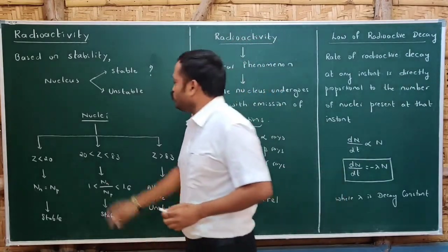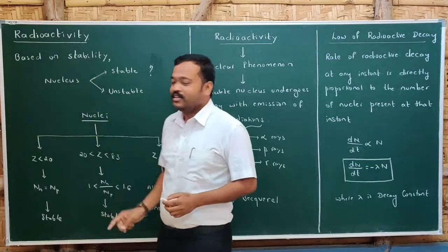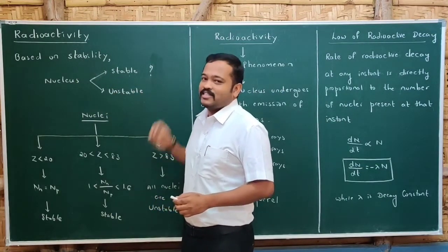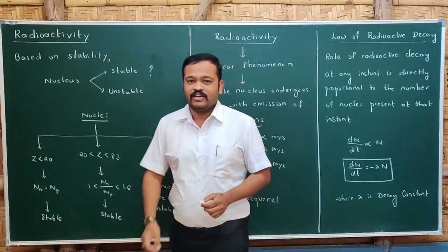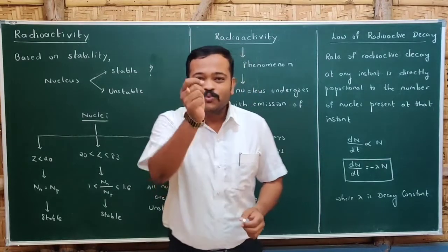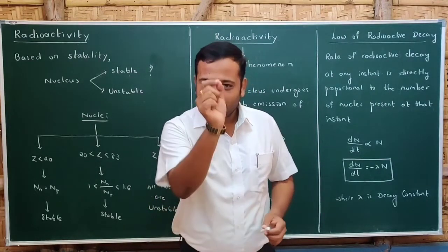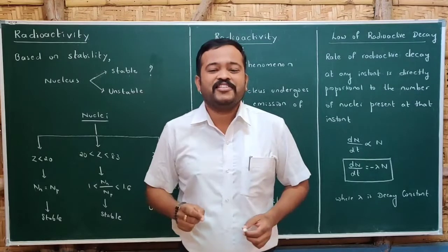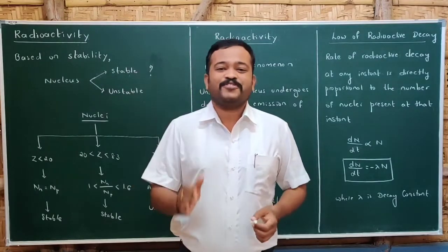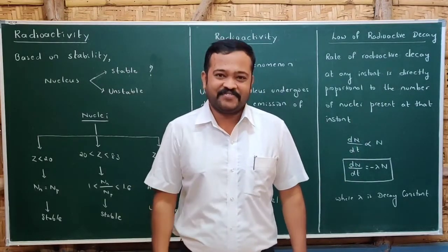Nuclei are of two types based on stability: stable nucleus and unstable nucleus. The stability of the nucleus depends upon the number of protons and number of neutrons present inside the nucleus.